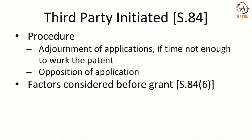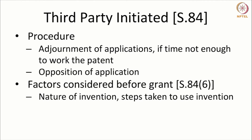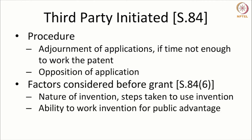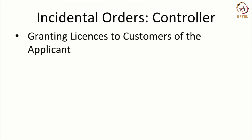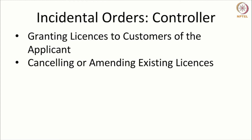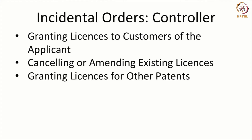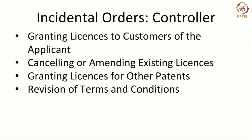There are factors that the controller has to consider before the grant of a compulsory license: the nature of the invention and steps taken to use it, the ability to work the invention for public advantage, the capacity of the applicant to undertake the risk of manufacturing and supplying it in India, and the fact that the applicant failed to obtain a voluntary license. The controller can also make certain incidental orders, granting licenses to customers of the applicant, and has the power to cancel and amend existing licenses.